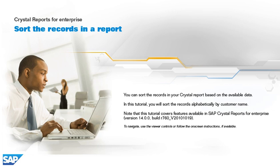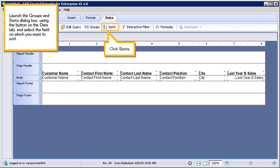To navigate, use the viewer controls or follow the on-screen instructions, if available. Launch the Groups and Sort dialog box using the button on the Data tab, and select the field on which you want to sort.